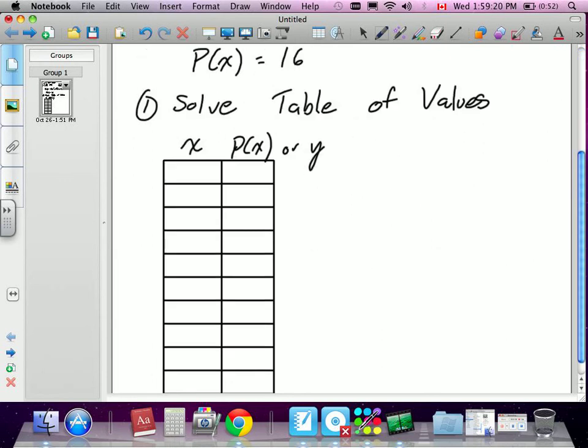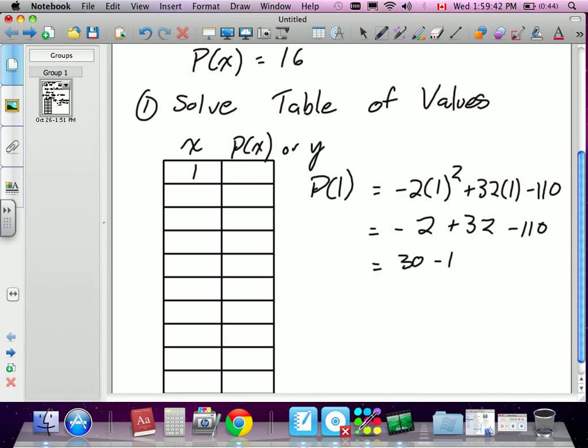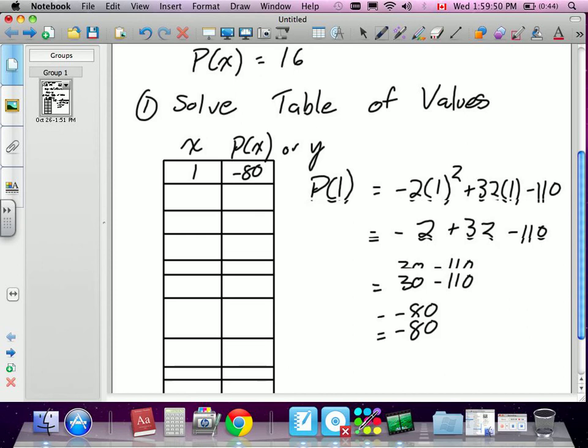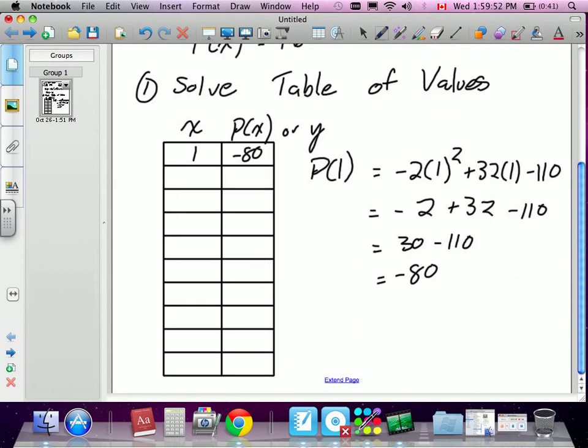If x was 1, our equation was P(1) = -2(1)² + 32(1) - 110. -2 + 32 - 110, 30 - 110, equals -80. So they would make negative $80,000 profit if they only sold 8,000 video games. Clearly that's not a number we're looking for, especially because we're trying to find the number 16.